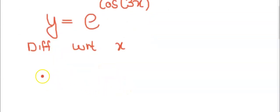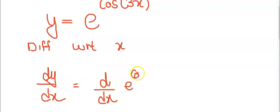When you do that one, obviously that becomes dy over dx and you put the operator on this side, d over dx of e to the cos 3x.